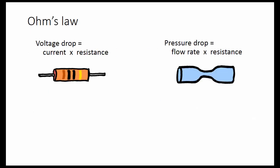Ohm's law says the voltage drop is equal to the current times the resistance. It's important to understand that voltage drop means the difference in voltage from one end to the other. For example, if you have 10 volts here and 9 volts here, that's a drop of 1 volt.